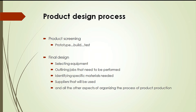Following extensive design testing, the product moves to the final design stage. This is where final product specifications are drawn up. The final specifications are then translated into specific processing instructions to manufacture the product, which includes selecting equipment, outlining jobs that need to be performed, identifying specific materials needed, selecting suppliers, and organizing all other aspects of the production process.